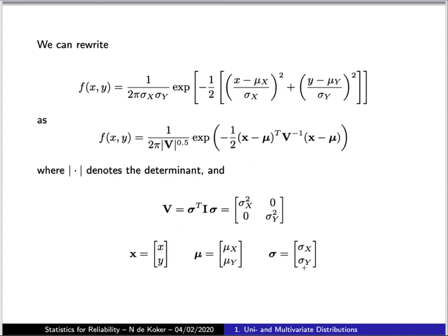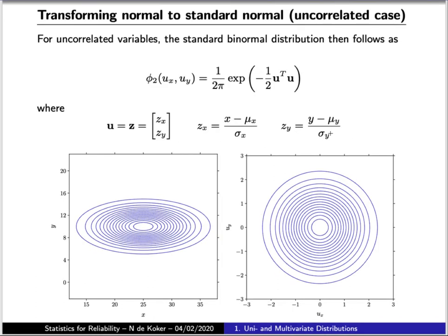Writing it in this way we can then take this sum and write it as this matrix vector product. Now an equivalent way of writing that is by defining the uncorrelated standard normal vector or variables which takes this form and then we can write the argument on the previous slide as this simple dot product of vectors.